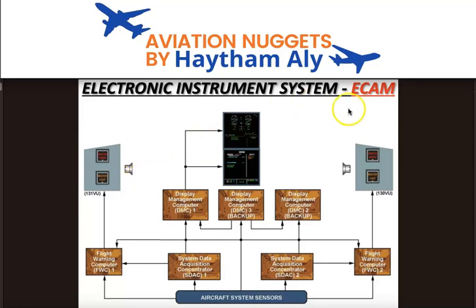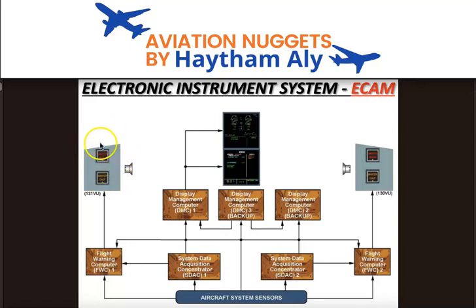The Flight Warning Computer acquires data directly from aircraft system sensors to generate red warnings, and from the SDAC to generate amber cautions. The difference between them: a red warning requires immediate action from pilots as it affects the safety of people on the aircraft, while an amber caution may be addressed later and typically relates to a problem affecting a machine or component on the aircraft.